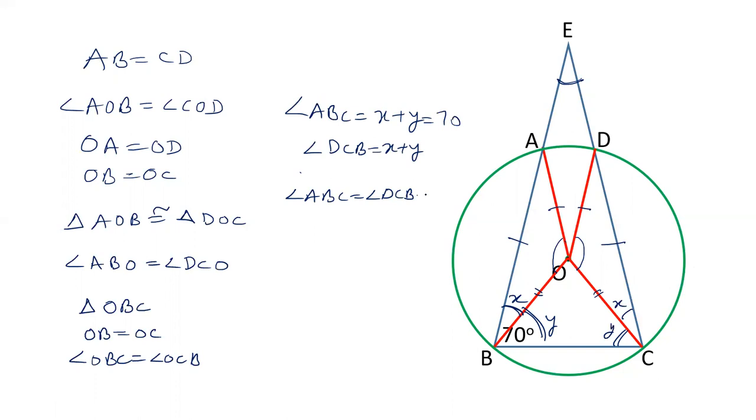So now in triangle BCE, angle B, that is angle EBC and angle ECB and angle E, we have to calculate. So here we have to calculate 70 plus 70 is 140. 180 minus 140 gives us 40 degrees. This angle will be 40 degrees.